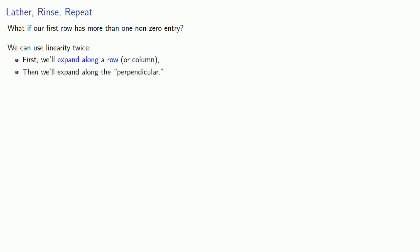So that's great if our first row only has one non-zero entry, but what if our first row has more than one non-zero entry? And for that, we'll use linearity twice. First, we'll expand along a row or a column. And then we'll expand in a way that we might describe as being perpendicular. We'll see what that means in a moment.